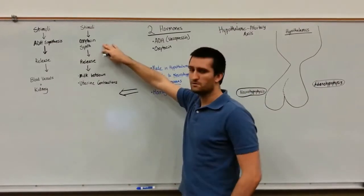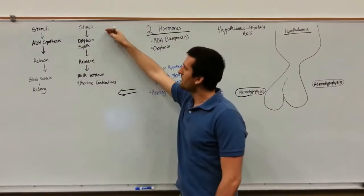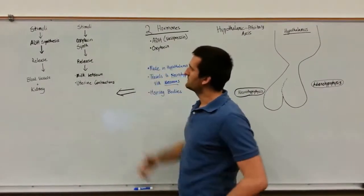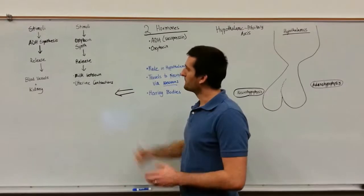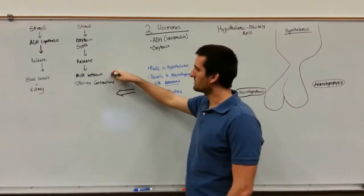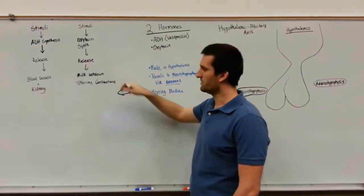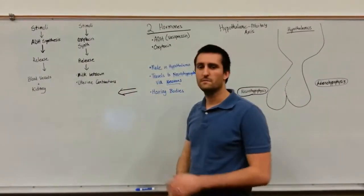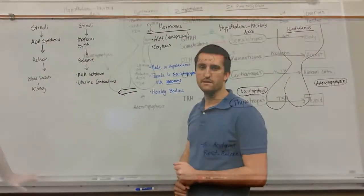The other hormone, oxytocin, happens in a similar manner. Upon release, it will cause milk letdown and uterine contractions, typically associated with pregnancy.